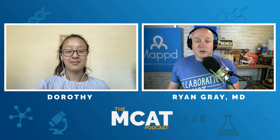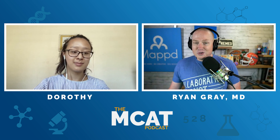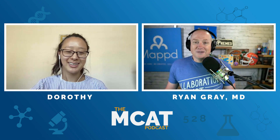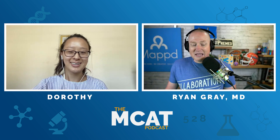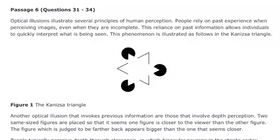So we're jumping into another passage. Last week I struggled with some of the discretes there. Hopefully we can pick it back up with our next passage. This passage was definitely one where I had to employ some active reading techniques just to stay focused. Let's go ahead and dive into passage six.